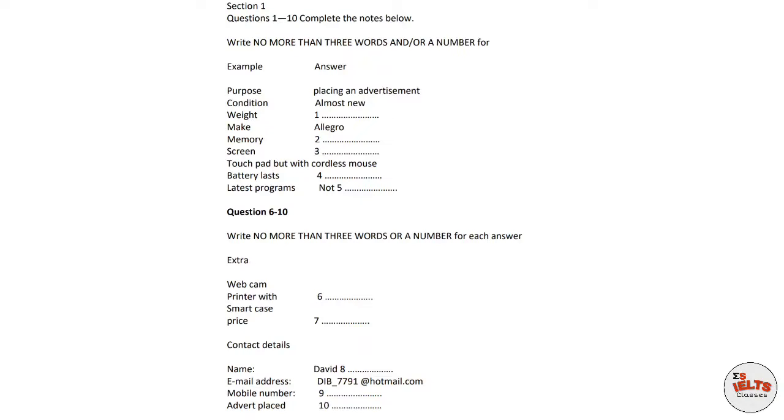Can I take some contact details for the advert? The name's David Bristow. B-R-I-S-T-O-W. Yes, that's it. And a mobile or email? Both, if you want. It's D-I-B underscore seven seven nine one at hotmail dot com. OK, and the mobile? That's 09-875-423-387. That's it. If you send the picture, I'll add it and print it out and stick it up for you. OK, I can get that to you today. Right. I'll type in here, advert placed, the 22nd of October. Fine. And good luck with the sale. Thanks. That is the end of section one. You now have half a minute to check your answers.